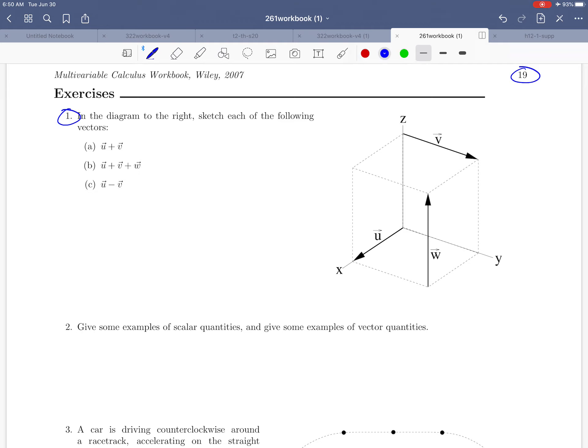So the point of this exercise is they're giving us three vectors u, v, and w just visually and they'd like us to draw representations of three vector sums. So starting with u plus v.